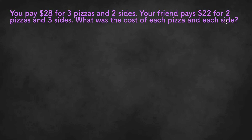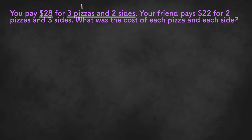In order to solve this word problem, we need to turn all these words into a System of Equations. It says that you paid $28 for three pizzas and two sides, so we could say $28 equals three pizzas and two sides. We need to designate a variable for pizzas and one for sides — the easiest to follow would be p for pizzas and s for sides.